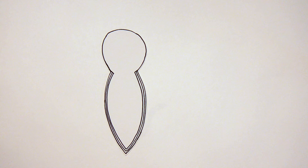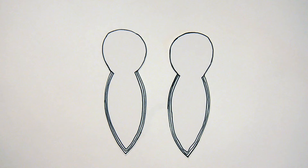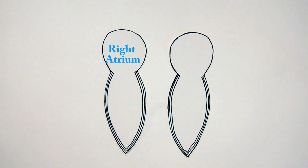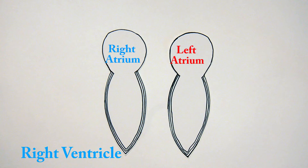Let's begin with the drawing. First you're going to draw two structures that are circular at the top and then thin down at the bottom to form a point. These make up the four chambers of the heart: the right atrium, left atrium, right ventricle, and left ventricle.